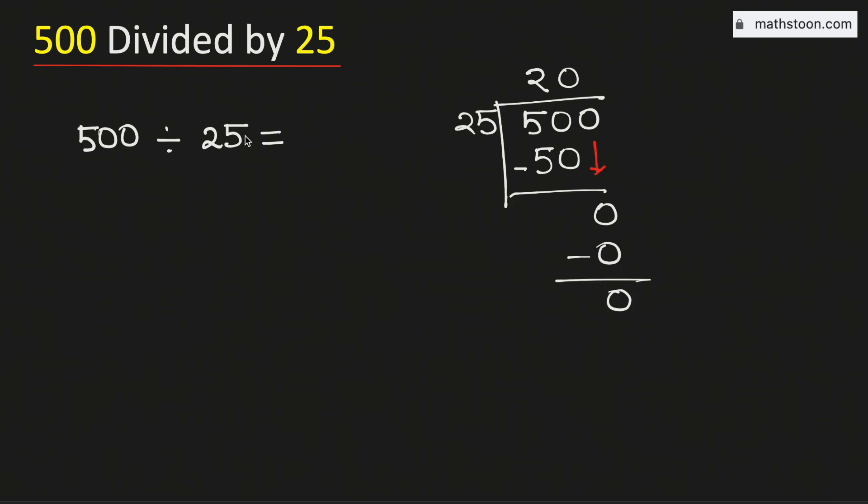Therefore, 500 divided by 25 is equal to 20, and this is our final answer.